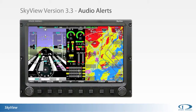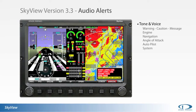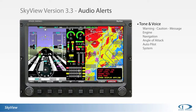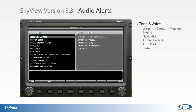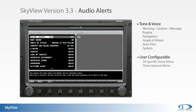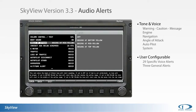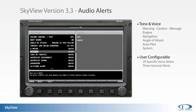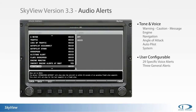Audio alerts in SkyView 3.3 provide voice or tonal prompts for engine, navigation, autopilot, aircraft system, and attitude events — caution, approaching altitude, exhaust gas temperature, flaps over speed. Users select what parameters they want covered under audio alerting, as well as the volume that those alerts output at. Audio alerting for the Dynon angle of attack indicator is also available.